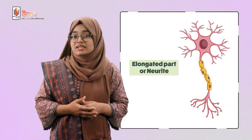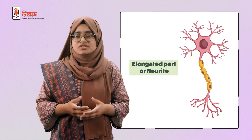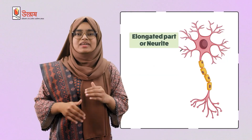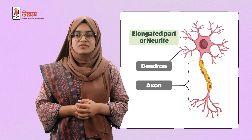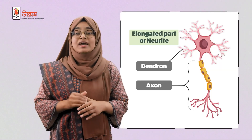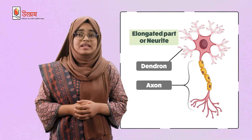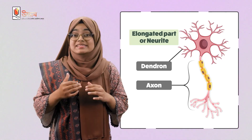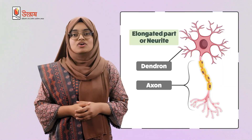Now let's come to the elongated part or neurite. They are extensions from the cell body of the neuron and are of two types: dendron and axon. The small branch elongations around the cell body are dendrons, which can be 0 to 100 in number for one cell body. A single long extension from the cell body is called the axon.